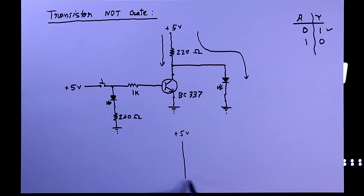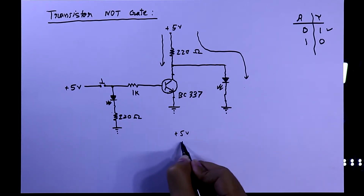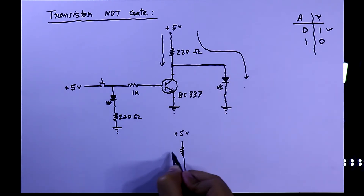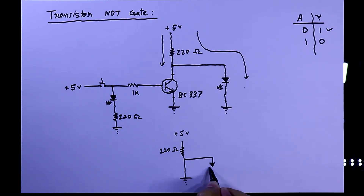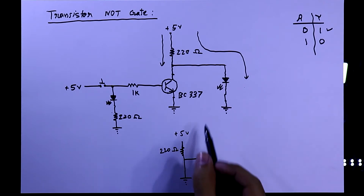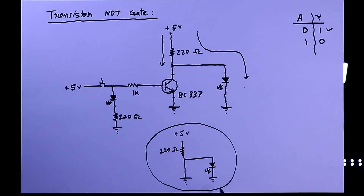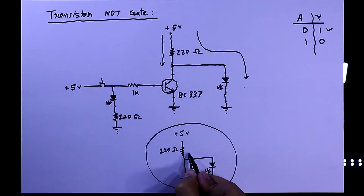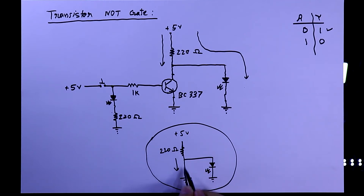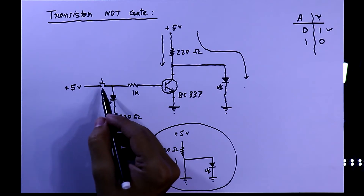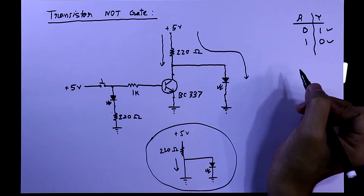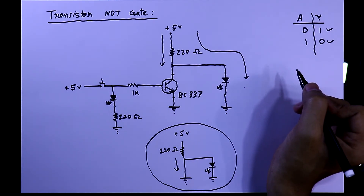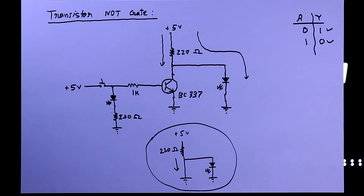The 5 volts is now connected to ground through the 220 ohm resistor. Current will not flow through the output LED because it will instead flow through the transistor, as that is the low resistive path. So in this way, whenever the switch is turned on, we will get zero output at the LED.